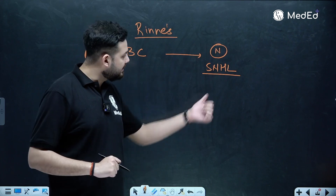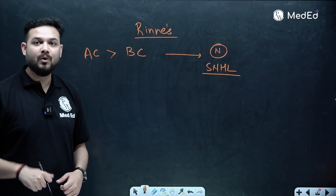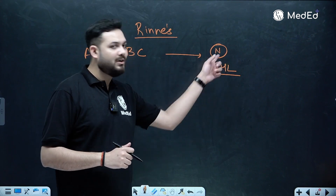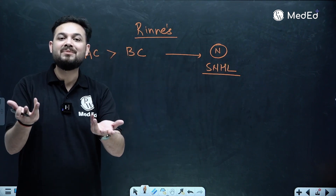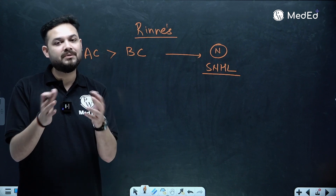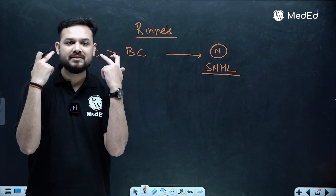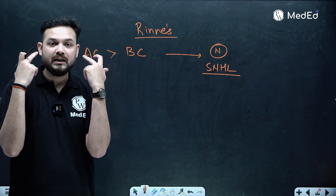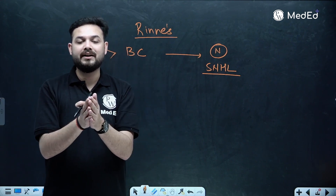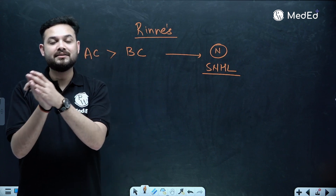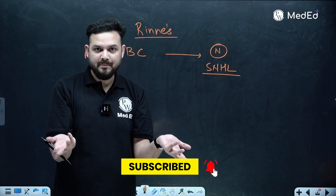You might ask: if air conduction is more than bone conduction in both normal and sensorineural hearing loss, how do we differentiate? That is where Weber's test helps. In Weber's test, a normal person will have centralized Weber's — both cochleae are equally stimulated. If there is sensorineural hearing loss, the sound will lateralize to the better side.